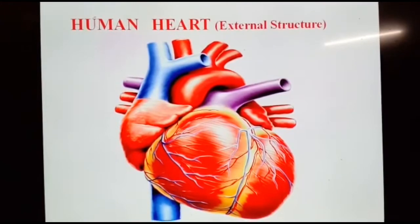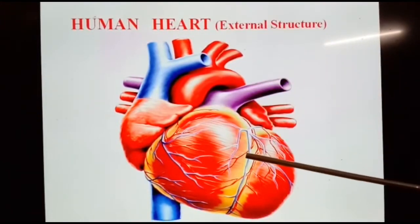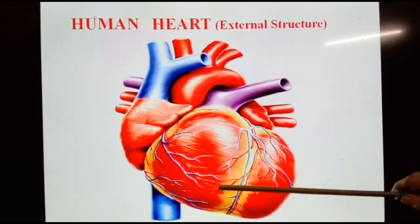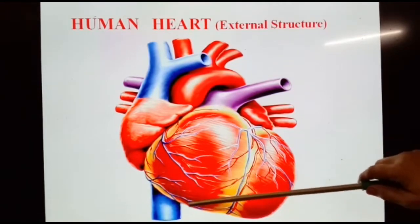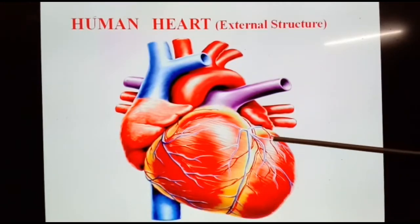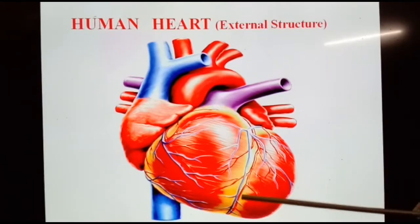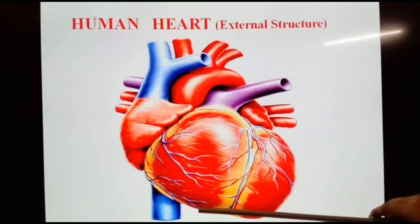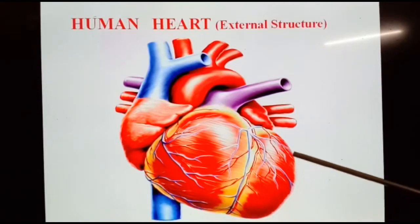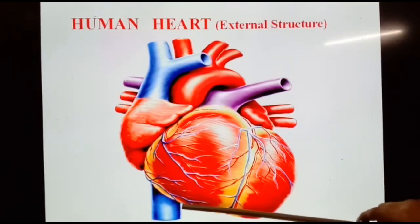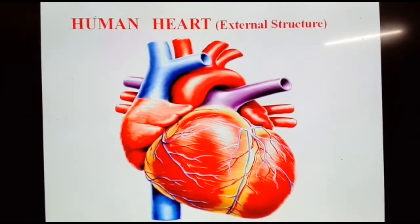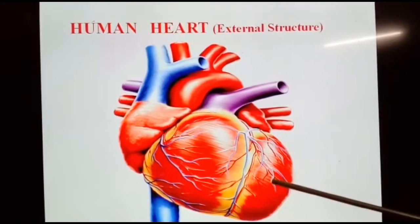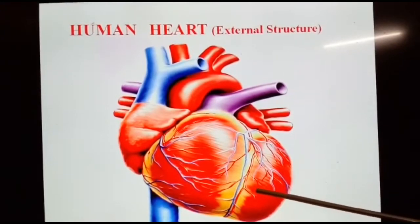The external structure of the human heart shows that it is enclosed inside a covering or membrane called the pericardium. Pericardium is of two types: the visceral layer, which directly covers the outside of the heart, and the parietal layer, which forms a sac around the outer region of the heart containing pericardial fluid. The pericardial cavity is a fluid-filled cavity which prevents the heart from injury or damage, prevents friction, and serves to lubricate the heart between the surrounding organs.